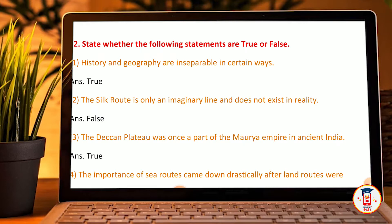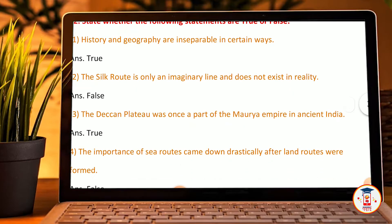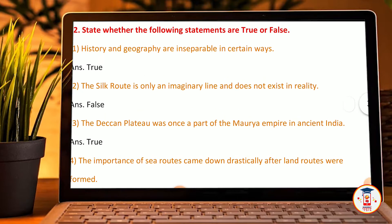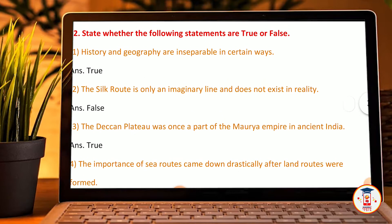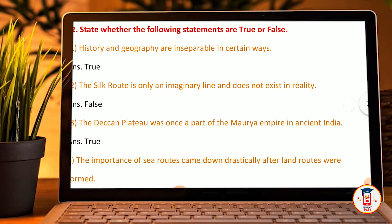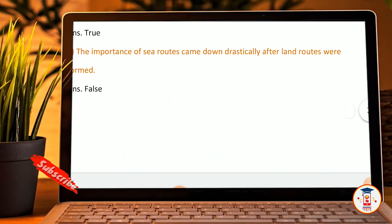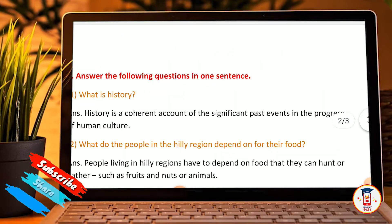The Deccan Plateau was once a part of Maurya Empire in Asian India — True. The formation of sea routes came down drastically after land routes were formed — False.